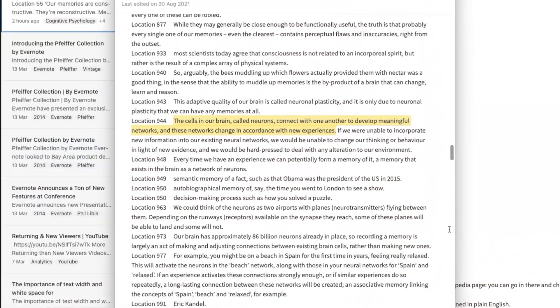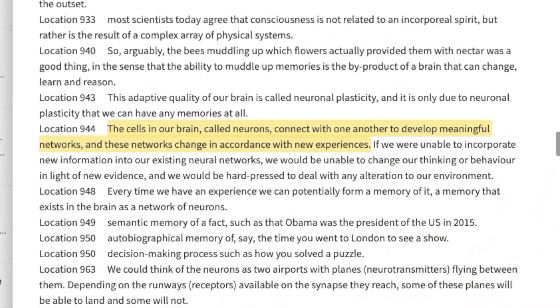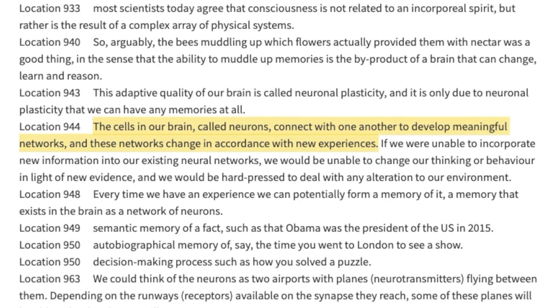One of my highlights from Dr. Shaw's book is perfect to illustrate it. The cells in our brain, called neurons, connect with one another to develop meaningful networks, and these networks change in accordance with new experiences. This is exactly how I imagine the use of tags in Evernote — they help me create this network of knowledge with information I already have and information I'll collect in the future.